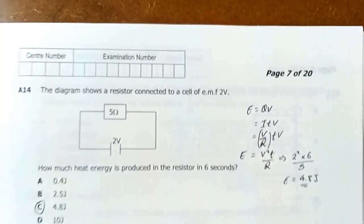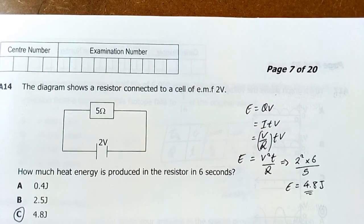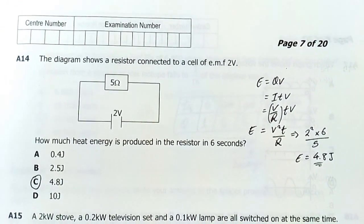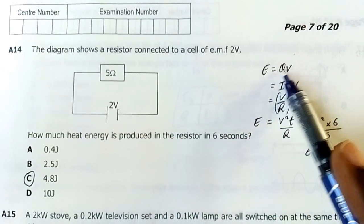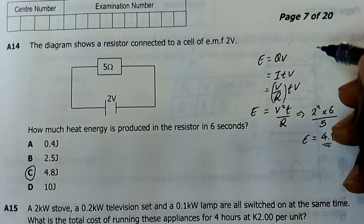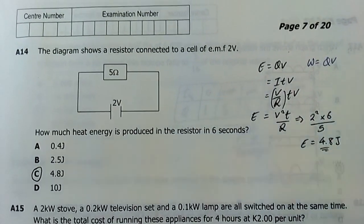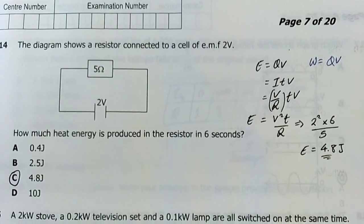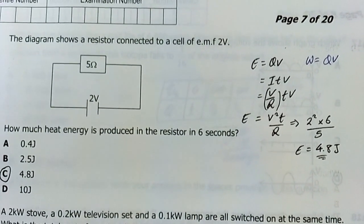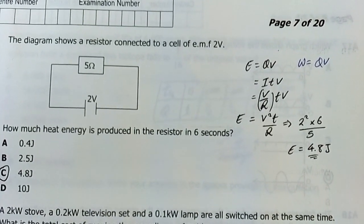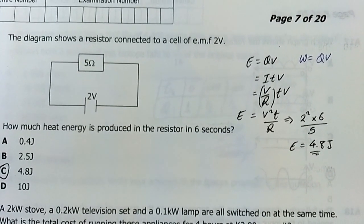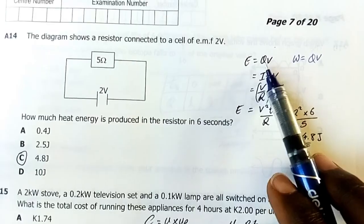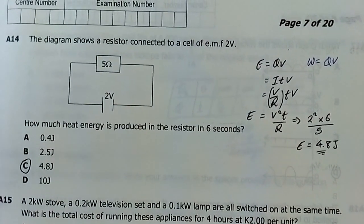Number 14: The diagram shows a resistor connected to a cell of emf of voltage 2. How much heat energy is produced in the resistor in 6 seconds? Energy, this formula is the same as work. Electric work is charge times voltage. Work and energy are the same - the amount of work done equals the amount of energy that is transformed from one form to another. So if you say work done is 12 joules it means 12 joules of energy have been converted to other forms. The formula is energy equals charge times voltage.